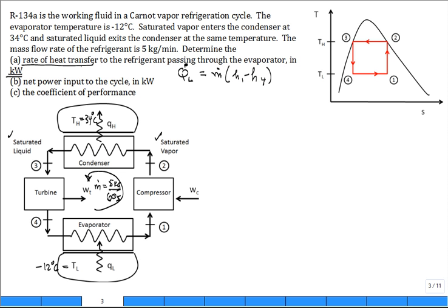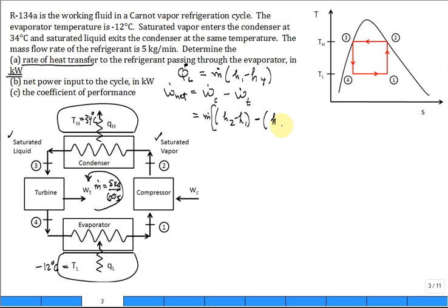For the net power into the cycle, Ẇ_net equals the work needed to drive the compressor minus what the turbine produces, which is ṁ × (h2 - h1) for the compressor minus ṁ × (h3 - h4) for the turbine. So we need the enthalpies to get the answer for part B. Mass flow rate is already given.